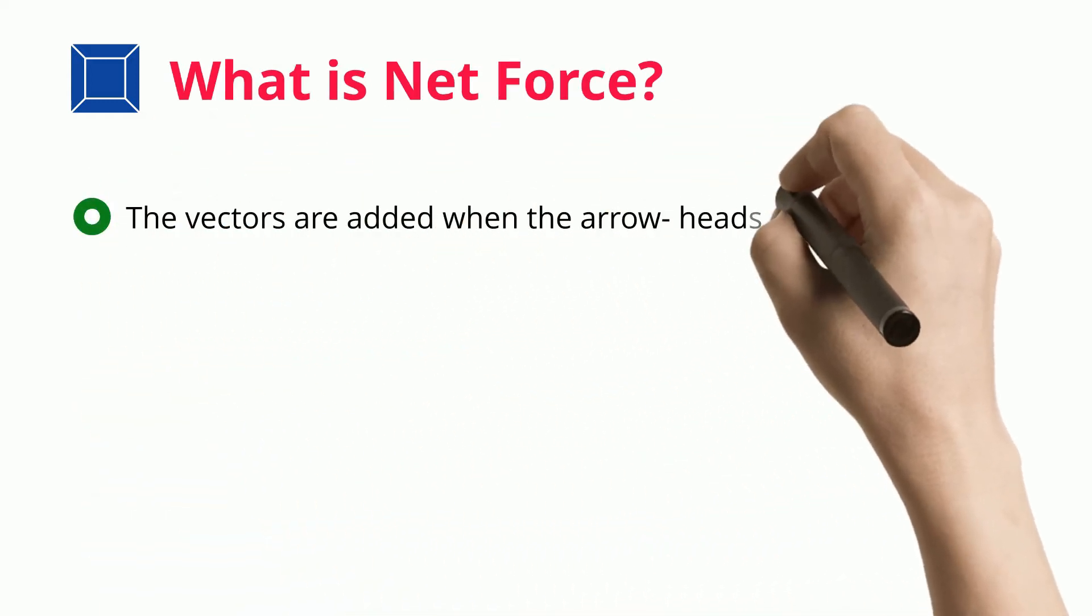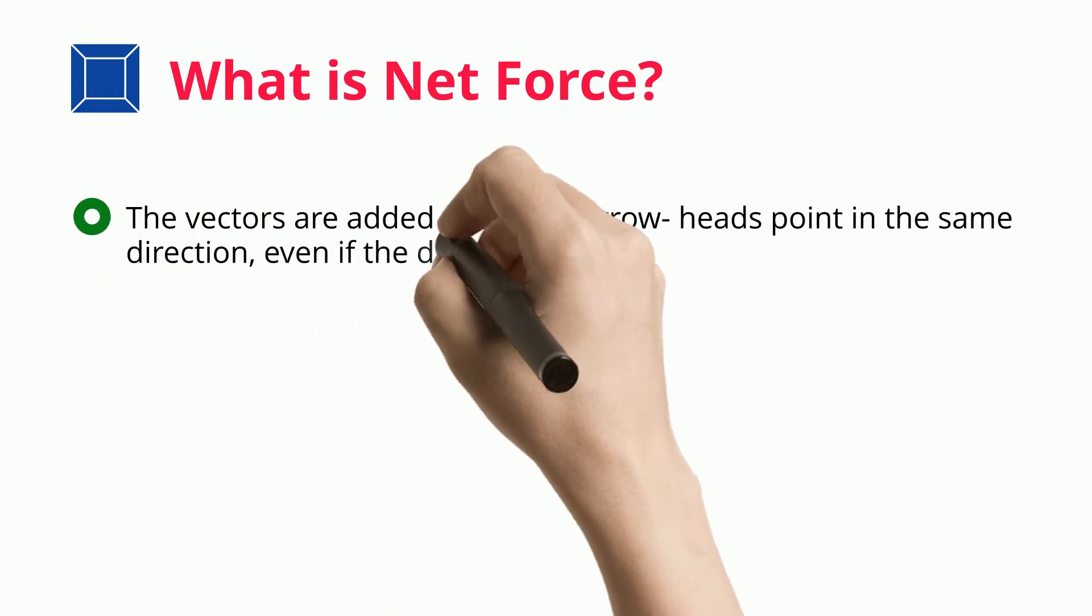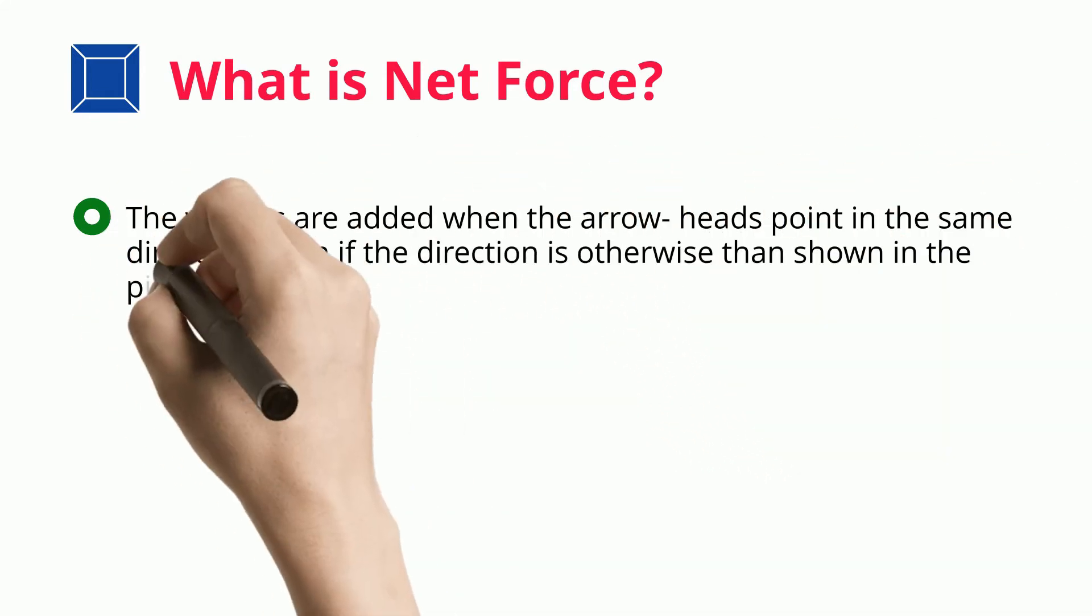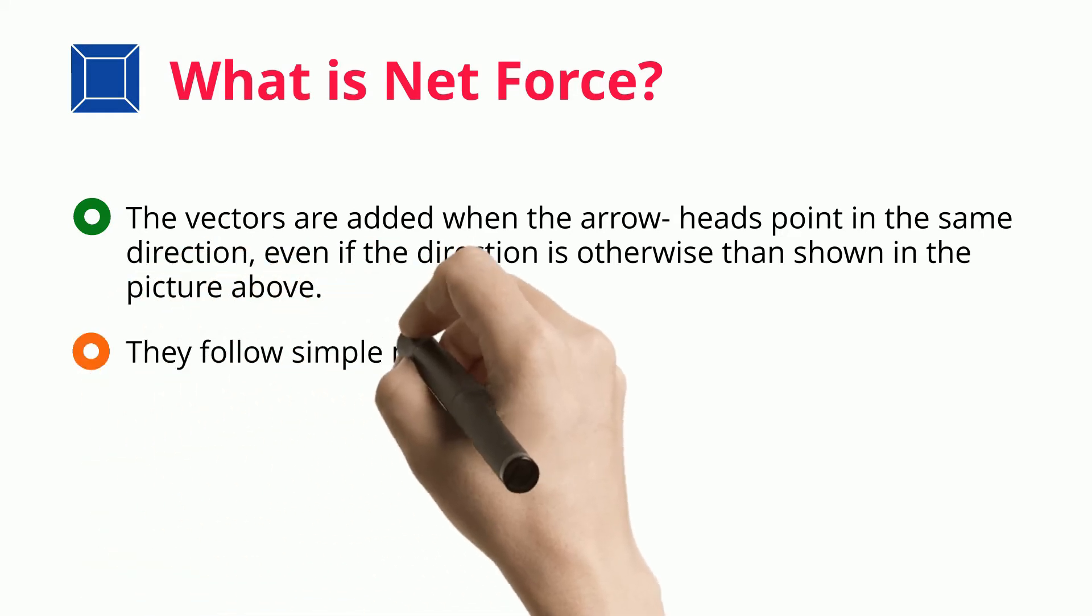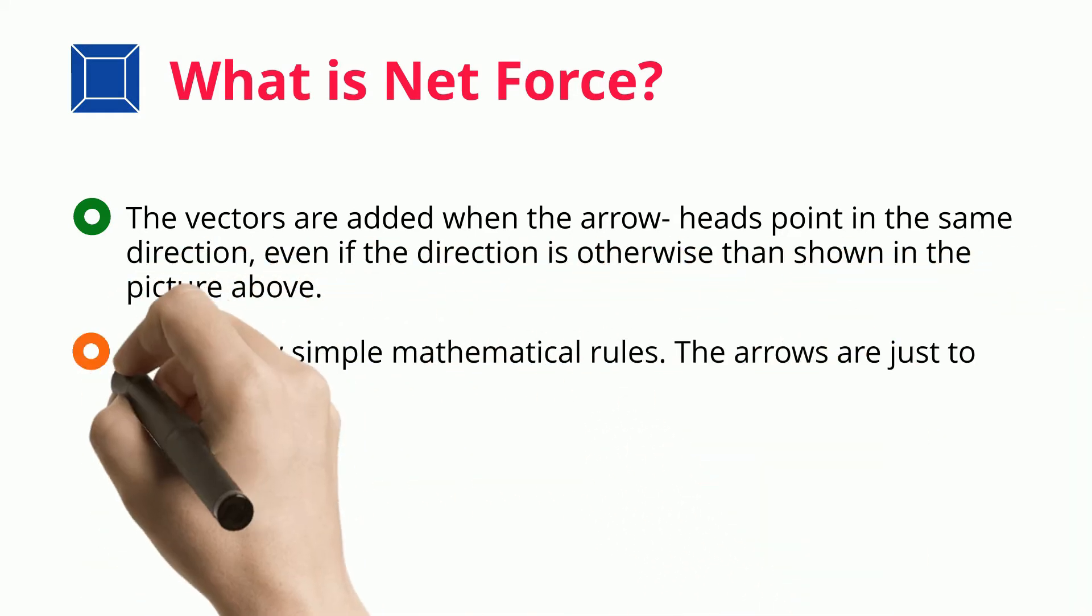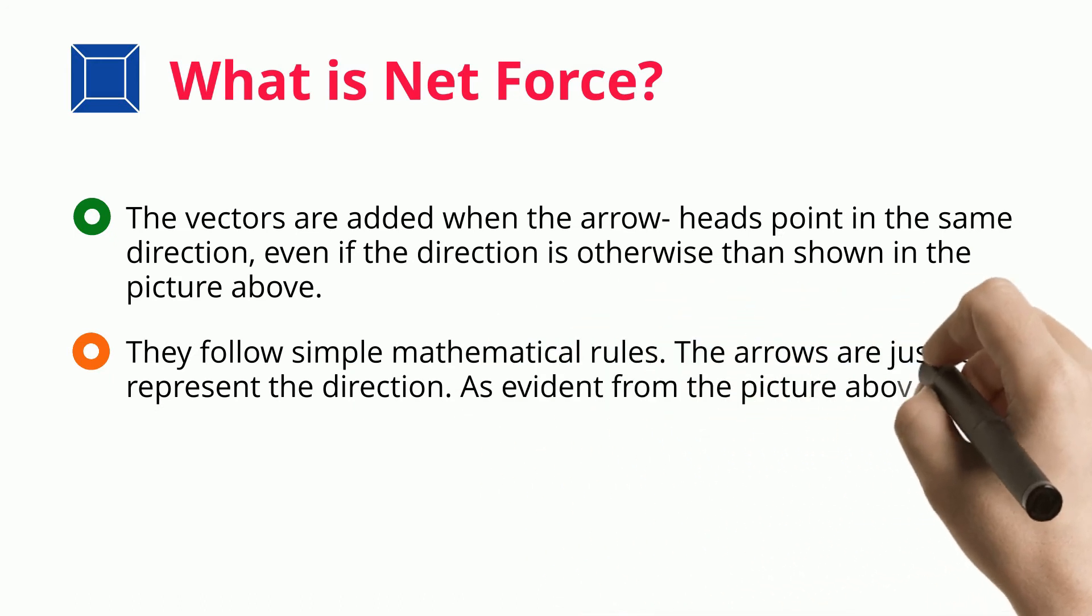The vectors are added when the arrow heads point in the same direction, even if the direction is otherwise than shown in the picture above. They follow simple mathematical rules. The arrows are just to represent the direction.